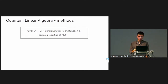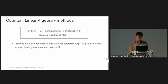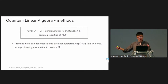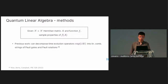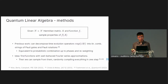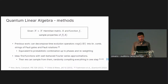The problem we target is: given a matrix with a Pauli decomposition and a function f, sample properties of f(A). We use a decomposition of time evolution operators into a linear combination of strings of Pauli gates and Pauli rotations. This decomposition has the interesting property that we can increase the number of Pauli gates and rotations while reducing the weight of the linear combination. The idea is to look for functions with well-behaved Fourier series approximations, then sample from this probabilistic combination.